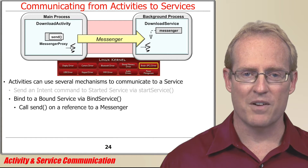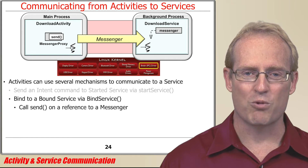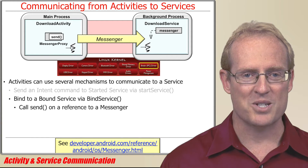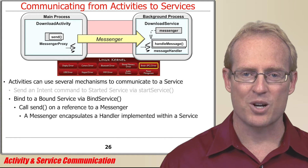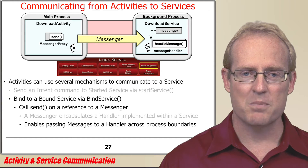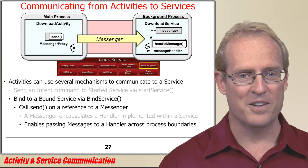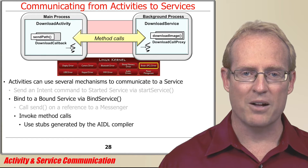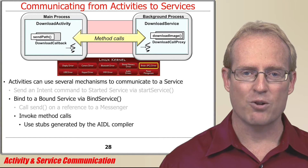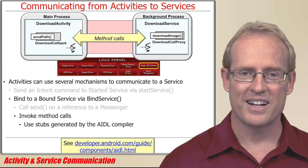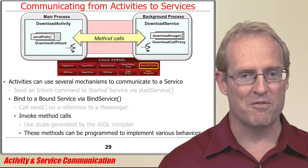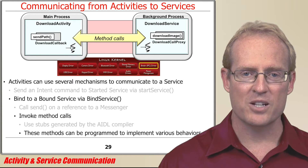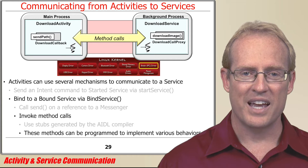The first of these communication mechanisms involves message passing by calling send on a reference to an Android messenger. A messenger is a generalization of the Handler framework that encapsulates a reference to a handler implemented within a service. An activity uses this reference to pass messages to the service's handler, even if it's configured to run in a different process. The other mechanism for communicating with bound services involves invoking methods on stubs generated by the Android Interface Definition Language compiler. These AIDL method calls can be programmed to implement various behaviors, such as two-way synchronous request-response interactions, two-way asynchronous request-response interactions, or purely one-way method calls, as shown in an upcoming video.